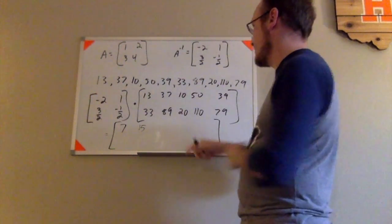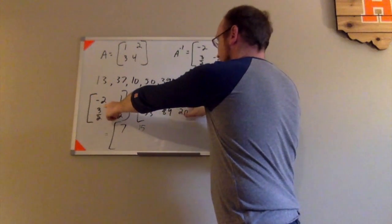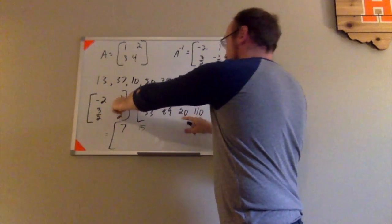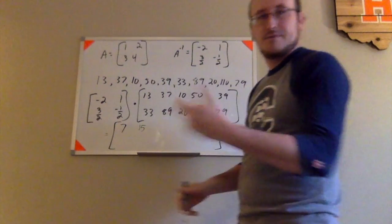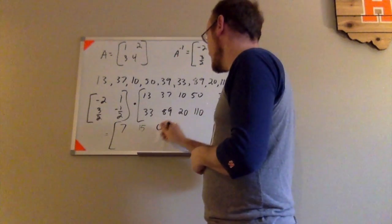Still with the first row, third column. So I have negative 2 times 10, which is negative 20. 1 times 20, which is 20. Negative 20 and 20 makes 0.